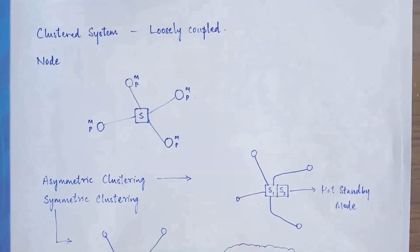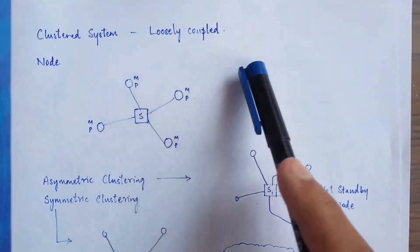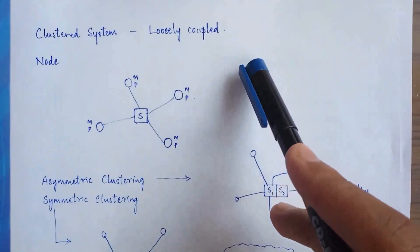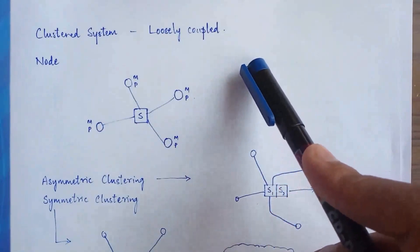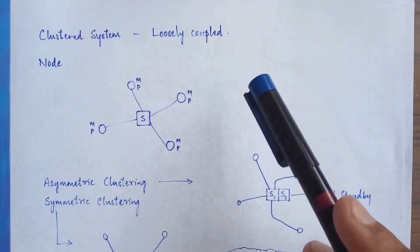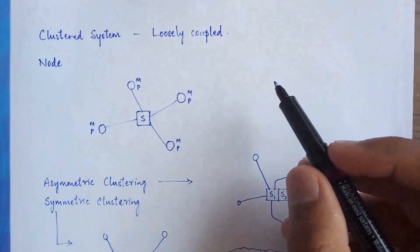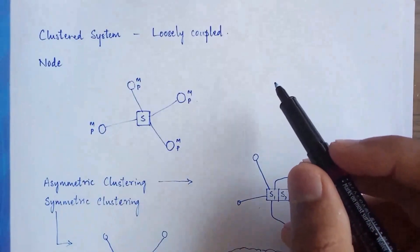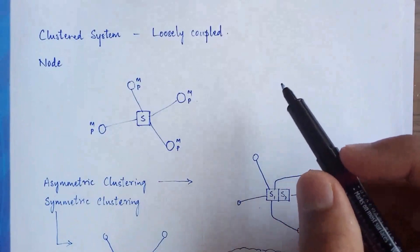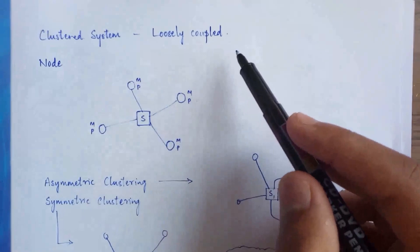In the case of a clustered system, we can consider it as a loosely coupled system. In a multiprocessor system, the multiple processors present inside a single computer used to share the memory and all the peripheral devices. But in the case of a clustered system, it is a loosely coupled system.